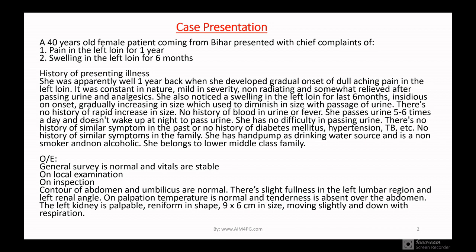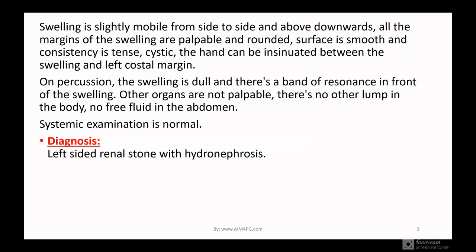There is no history of similar symptoms in the past, no history of diabetes mellitus, hypertension, or TB. No family history of similar symptoms. She uses a hand pump for drinking water, is non-smoker and non-alcoholic, and belongs to a rural middle-class family. On examination, general survey is normal and vitals are stable. On inspection, the contour of the abdomen and umbilicus are normal. There is slight fullness in the left lumbar region and left renal angle. On palpation, temperature is normal, tenderness is absent, and the left kidney is palpable — uniform in nature, approximately 19 cm in size, moving slightly up and down with respiration.